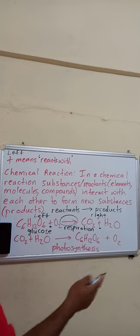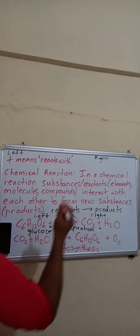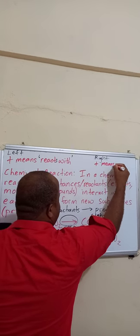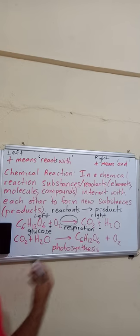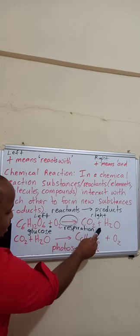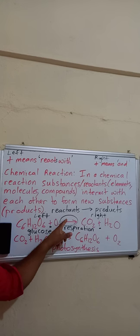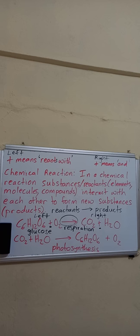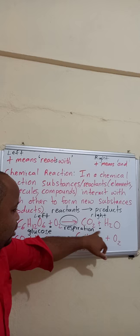On the right side the plus sign simply means 'and.' The arrow means 'to produce.' So the full equation reads: glucose reacts with oxygen to produce carbon dioxide and water. The chemical reaction was glucose reacting with oxygen to give carbon dioxide and water.